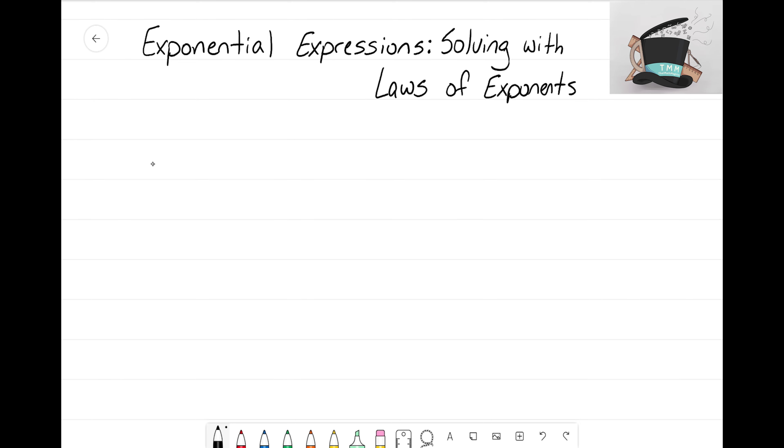Let's look at the problem k to the negative fifth power. Using our fifth law of exponents, we recognize there's a negative in the exponent. All we have to do is take that k, put it underneath a 1, and now the exponent changes from negative 5 to positive 5. That's all you have to do - if it's a negative exponent, you put it underneath